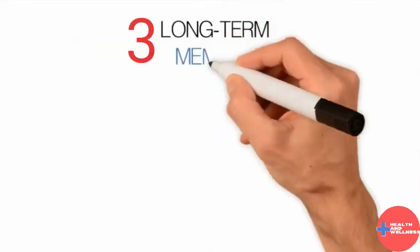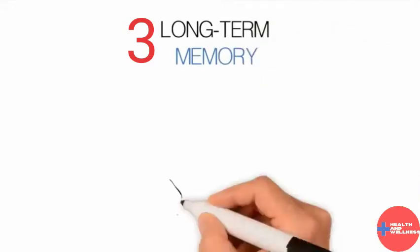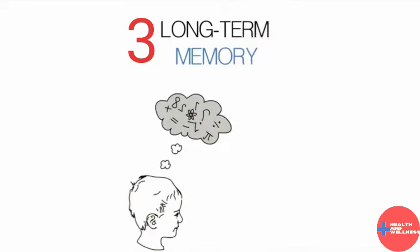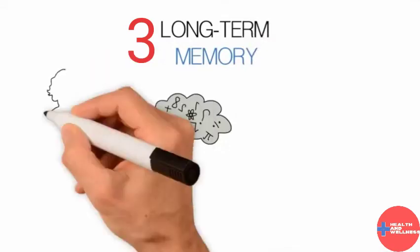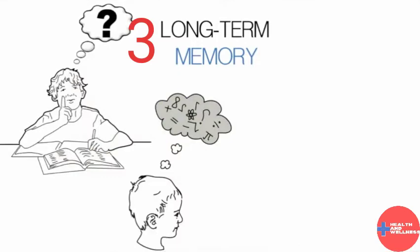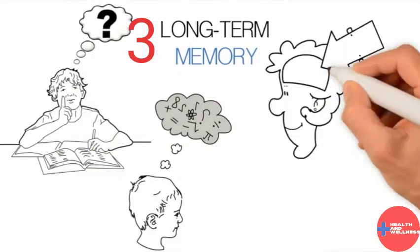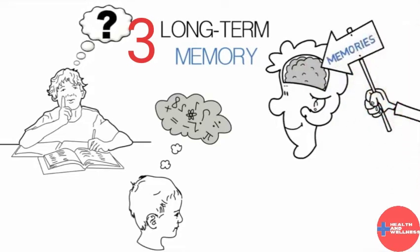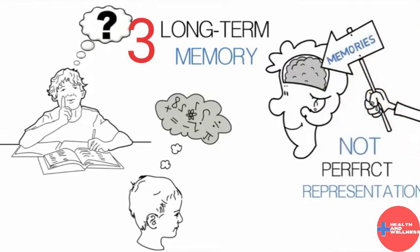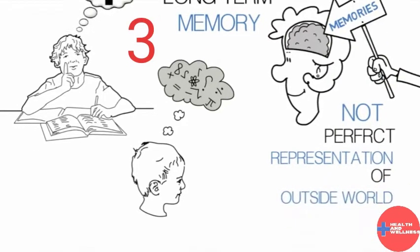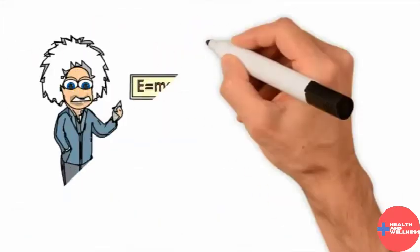Long-term memory is where we hold all our memories. One goal of learning is to get information into long-term memory so we can use it later when we need it. We have a lot of room to store memories, but the memories we store are not perfect representations of the outside world. Long-term memory is relatively permanent.